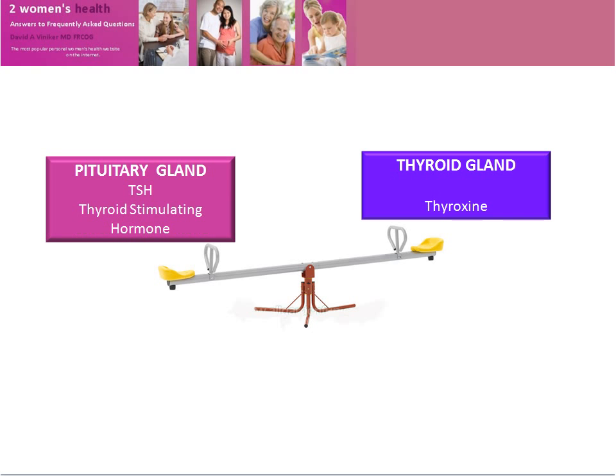The pituitary gland releases thyroxin — which increases body metabolism, speeds up the heart and all the chemical reactions in the body. The thyroid gland is under the control of the pituitary, with the pituitary releasing thyroid stimulating hormone, a term which is self-explanatory.